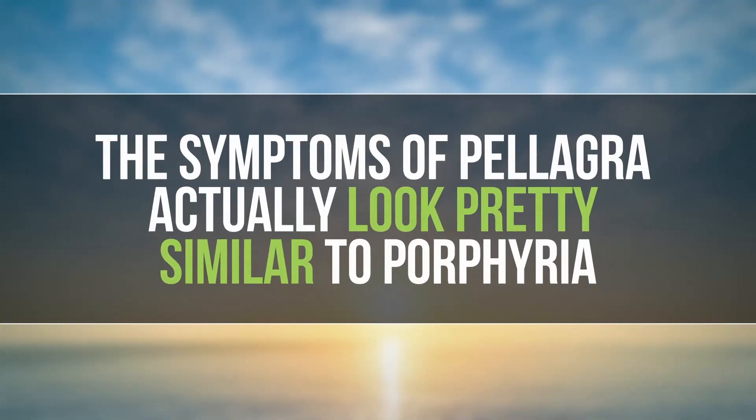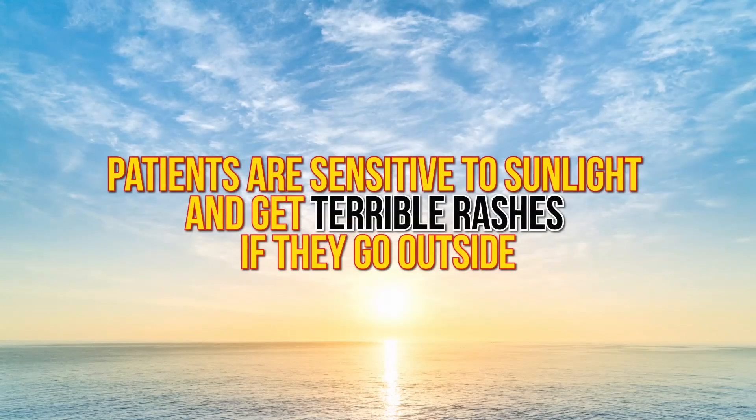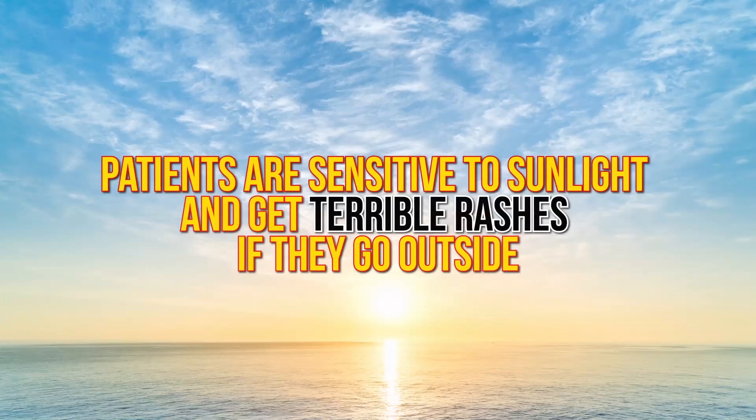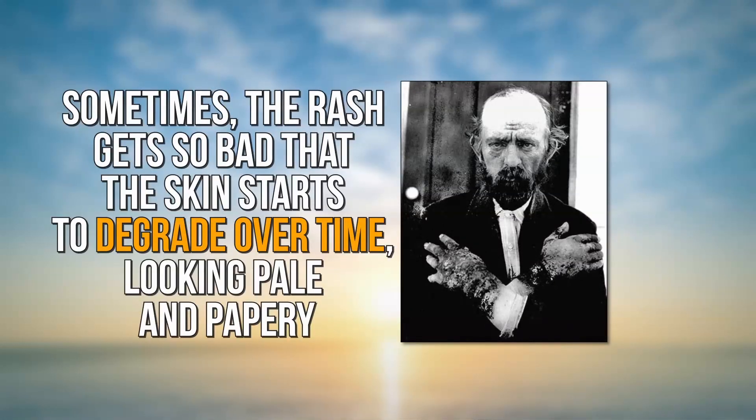The symptoms of pellagra actually look pretty similar to porphyria. Patients are sensitive to sunlight and get terrible rashes if they go outside. Sometimes the rashes get so bad that the skin starts to degrade over time, looking pale and papery.